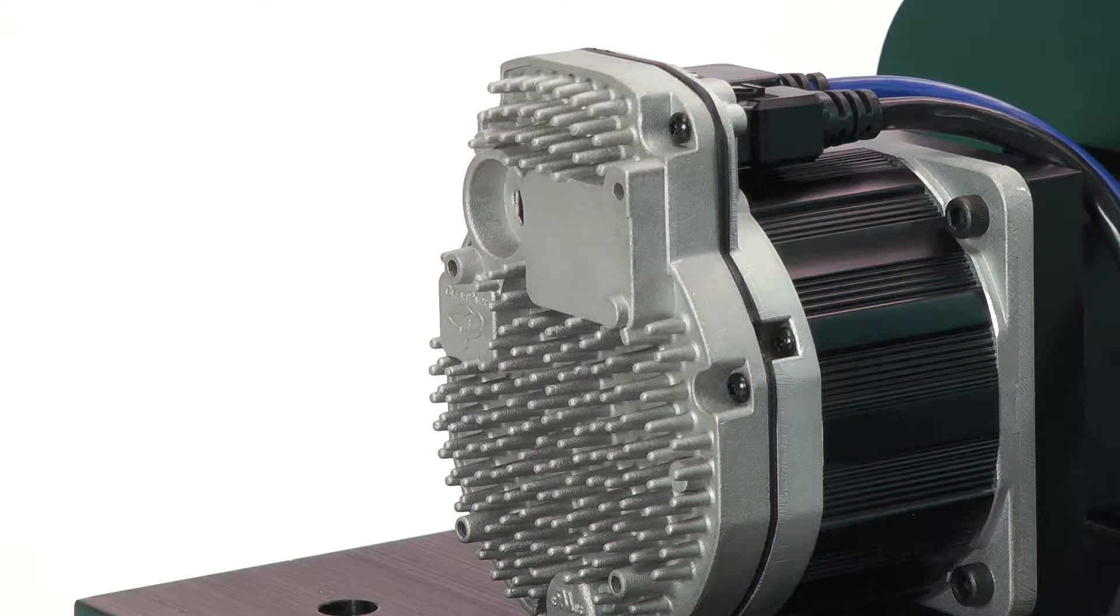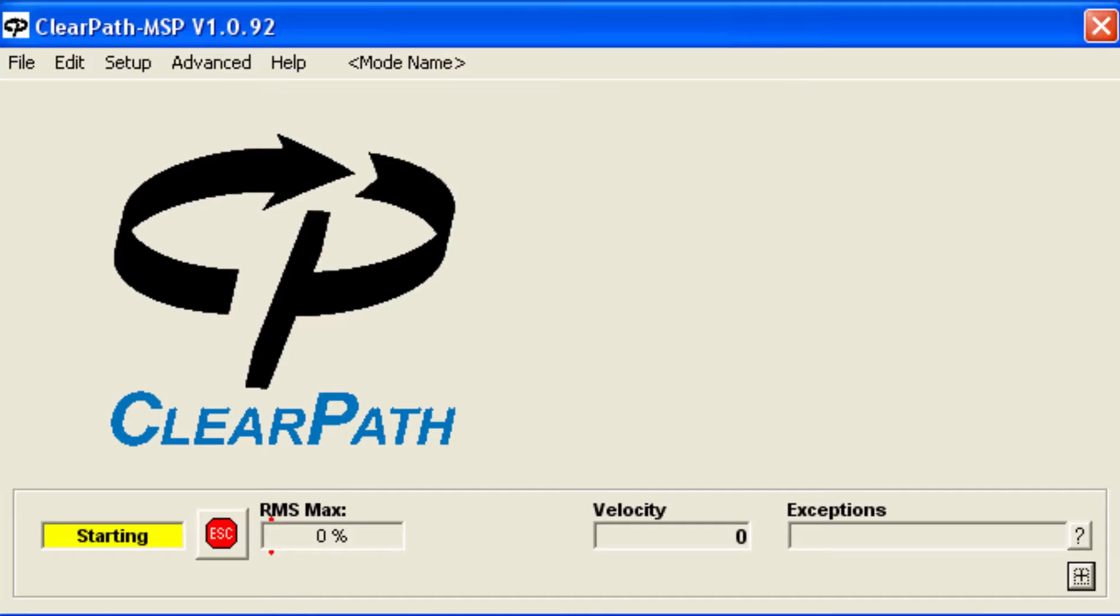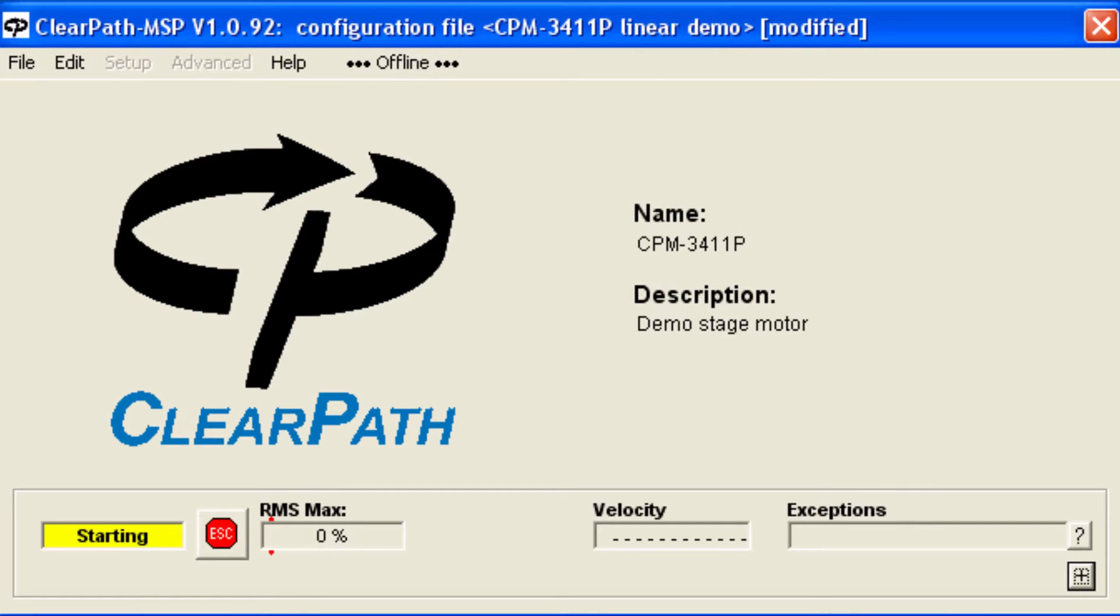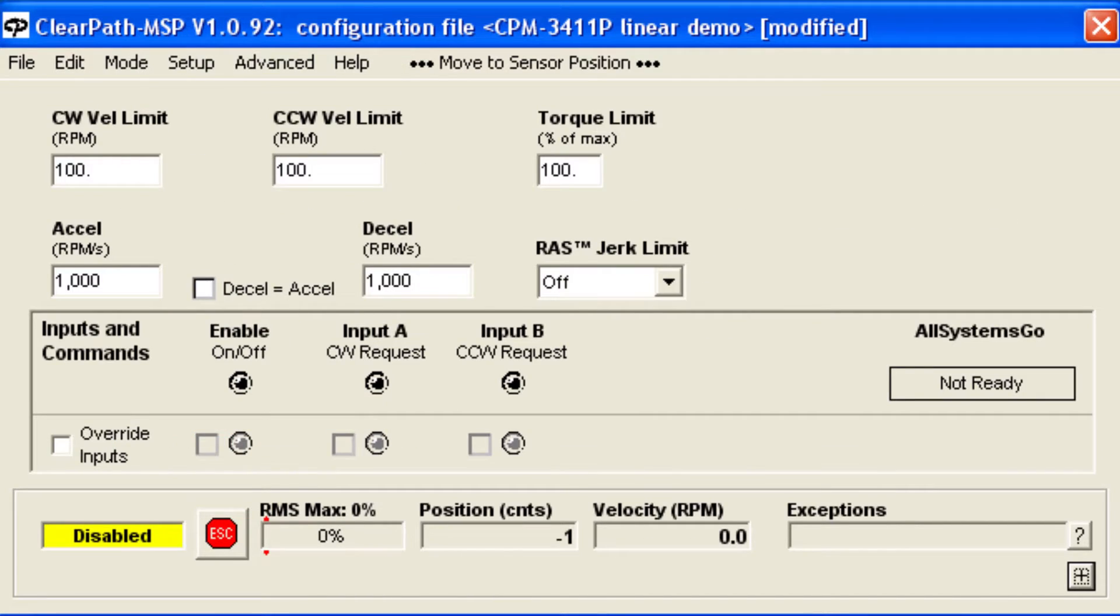To use this mode, connect ClearPath to the MSP software and configure ClearPath with your motion parameters: velocity limit in each direction, acceleration and deceleration rates, and RAS, Teknic's automatic jerk and jerk derivative limiting feature that makes motion transitions very smooth.